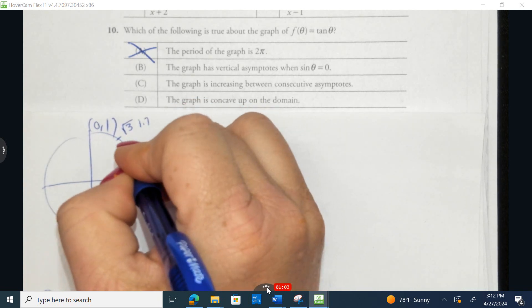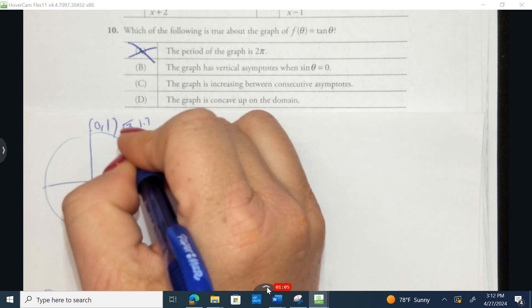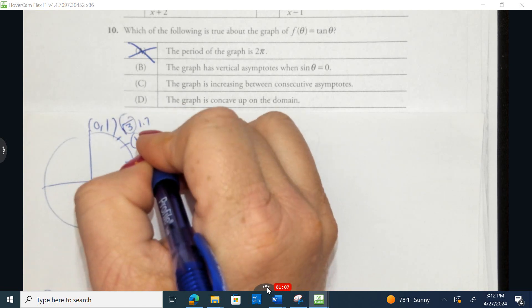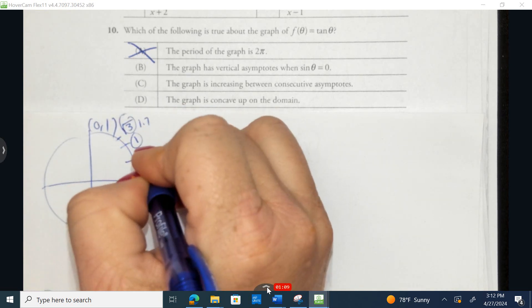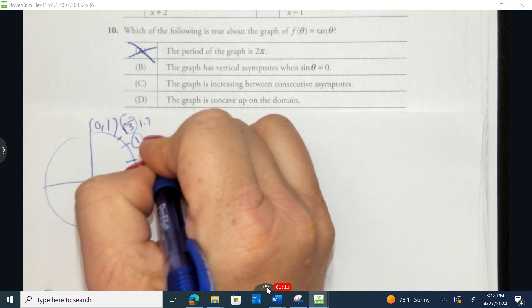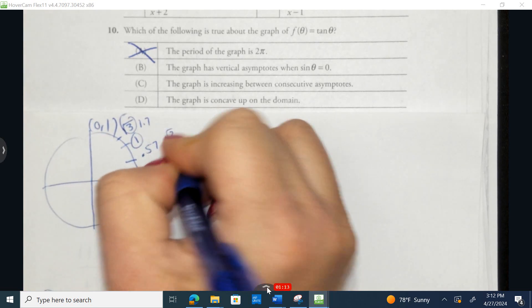At 45 degrees, the tangent is 1. And at 30 degrees, the tangent is about 0.57, which is √3 over 3.